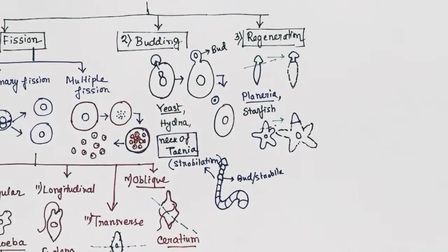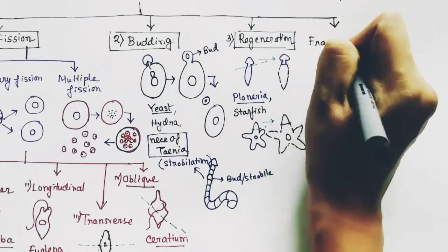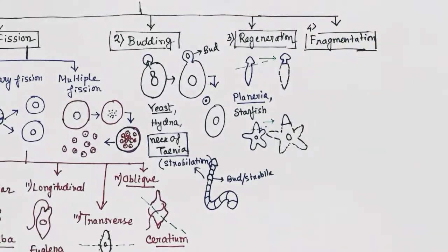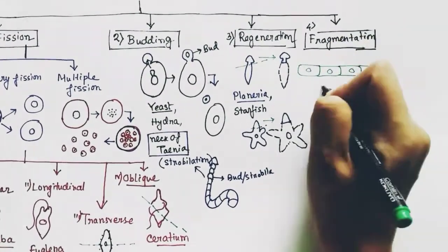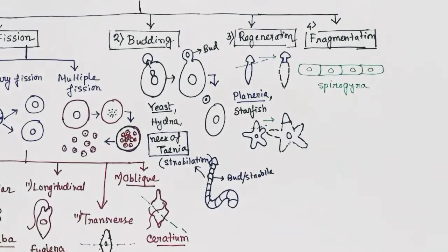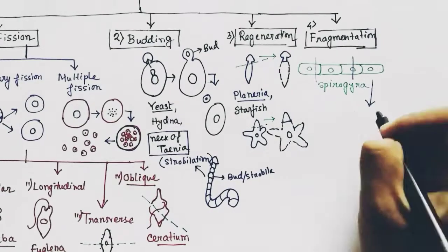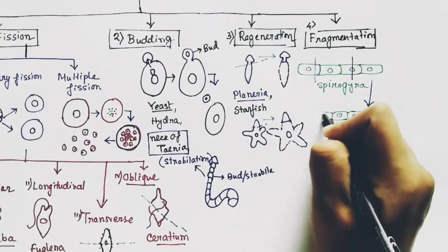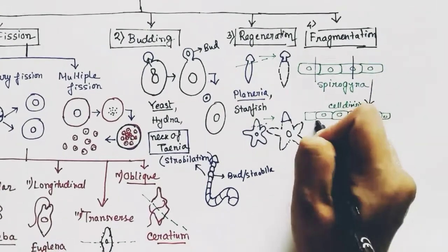The fourth type of asexual reproduction is fragmentation. In this method, the body of the adult organism breaks apart into two or more pieces, each of which then grows and reforms the deficient parts to constitute a complete animal. What is drawn here is a Spirogyra, which is an example where fragmentation is found.